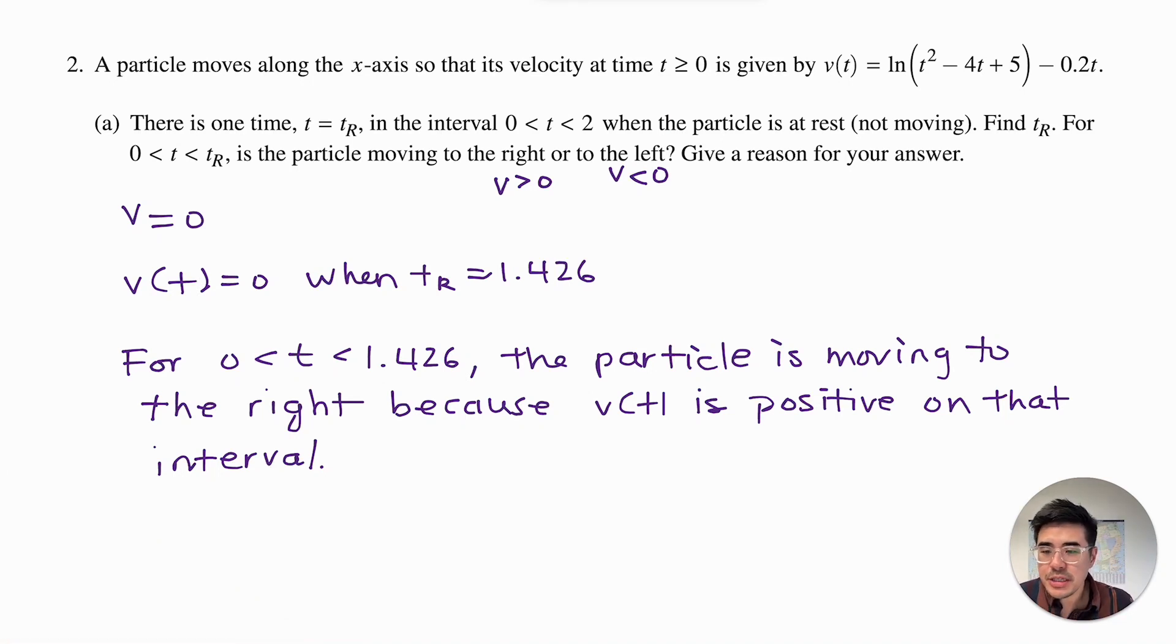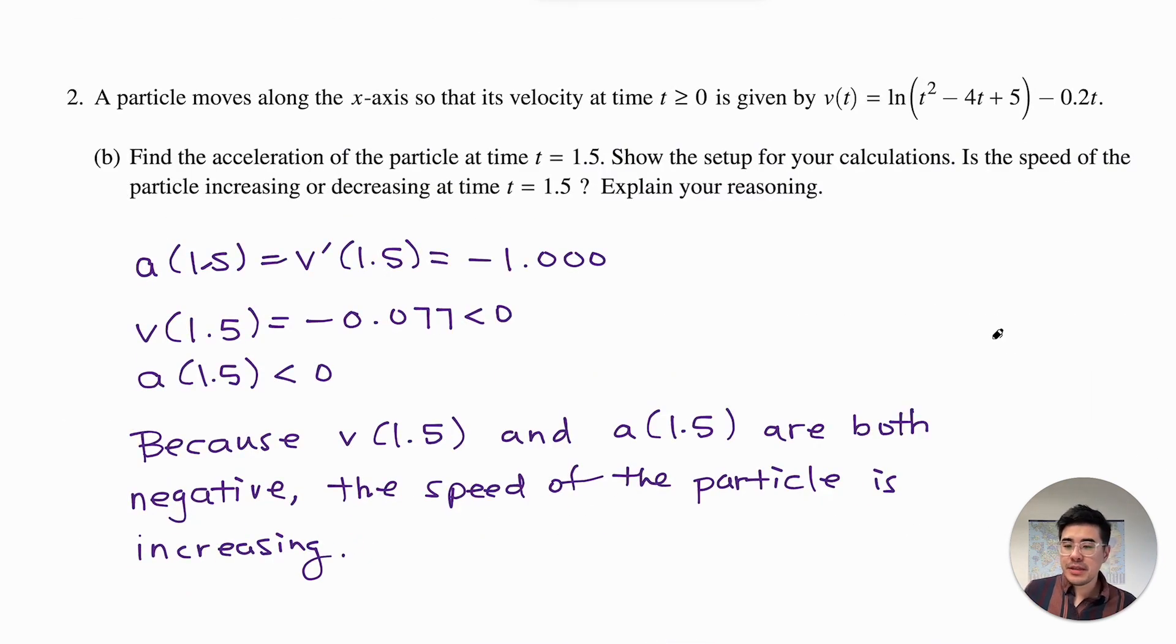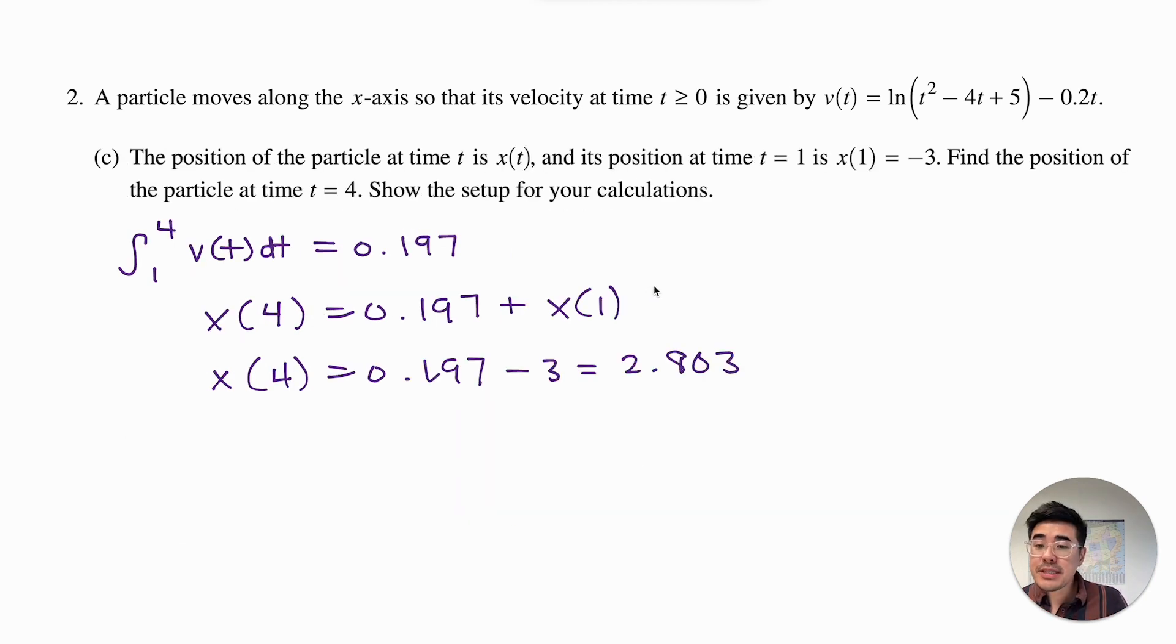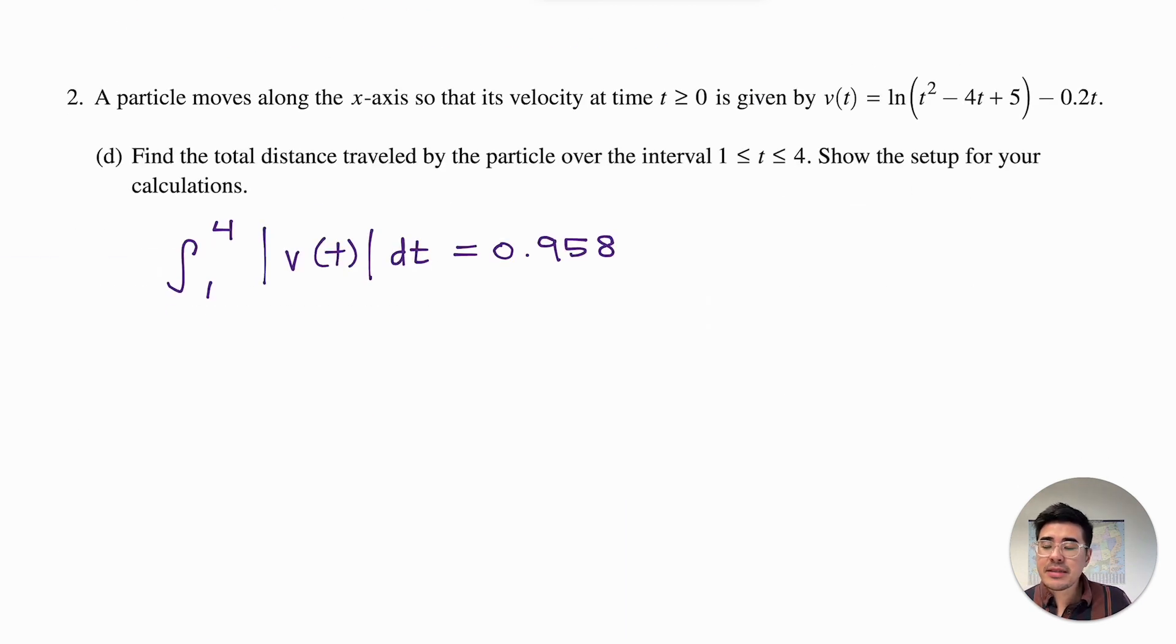Let's predict the point distribution for question 2. I think you'd probably get a point for calculating where t_r is where the particle is at rest, and then you'd get another point for writing a complete sentence that indicates that the particle is moving to the right. For part B they want the acceleration, so you'd probably get a point for calculating the acceleration. Then you'd probably get a point for showing that v and a are both negative. And then you get a third point for writing a complete sentence talking about how the speed is increasing with the proper reasoning. So part C you'd probably get a point for calculating the correct displacement. Then you'd get another point for utilizing the starting point. And then you'd probably get a third point for calculating the correct position at time t equals 4. And then since D is a simple question, you'd probably get all or nothing, so this would just be one point over here.